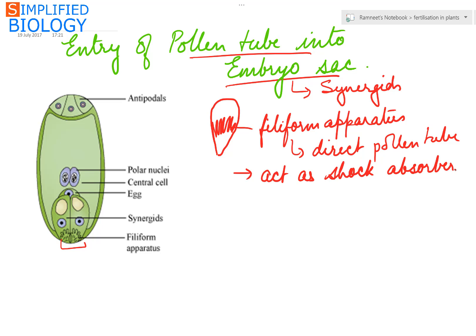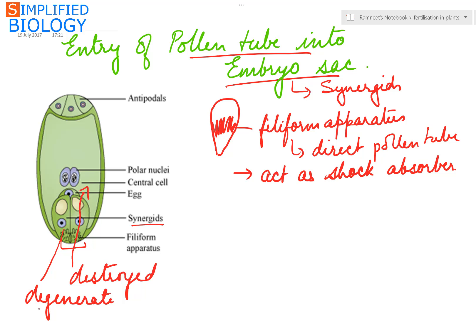As the pollen tube enters the embryo sac, one synergid is destroyed while the second one starts degenerating. In the meantime, the two polar nuclei present in the embryo sac fuse to form the secondary nucleus.